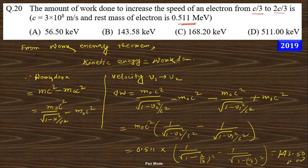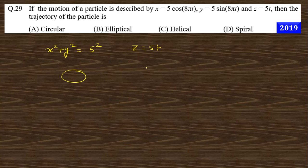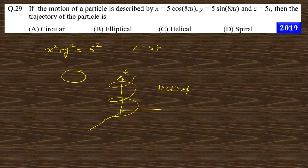Remember this was in MeV, so you need to convert to kilo-electron volts by multiplying by 1000. So option number b is the correct answer for this question. Moving to the next question: if the motion of a particle is described by x equal to some expression, y equal to some expression, and z equal to some expression, you can see that x² plus y² equals 5², which describes a circle, and z depends on time, increasing with time. So the trajectory is a helical path, and option number c is the correct answer.